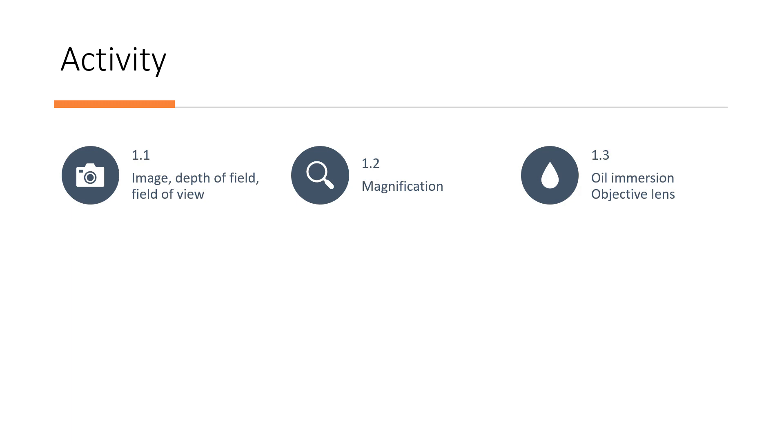There are three activities in experiment 1: Activity 1.1 - determine the image, depth of field, and field of view. Activity 1.2 - determine the magnification. Activity 1.3 - use of oil immersion.